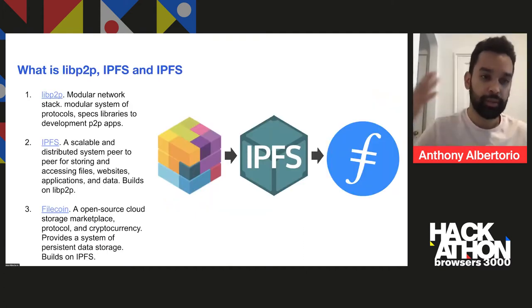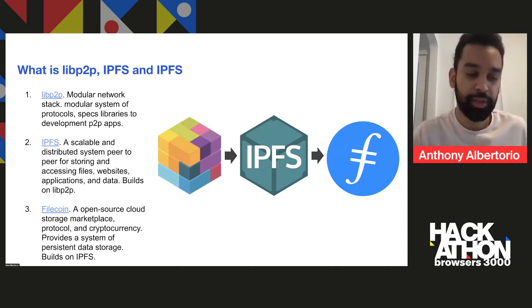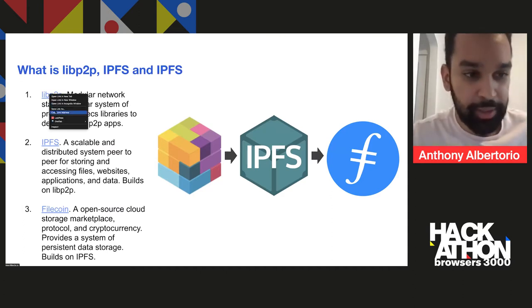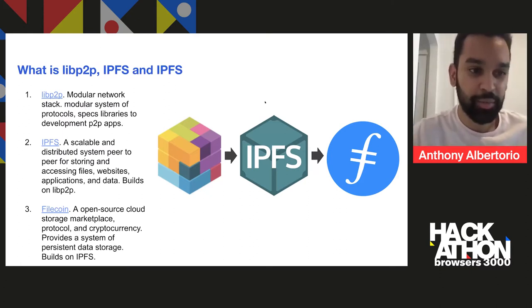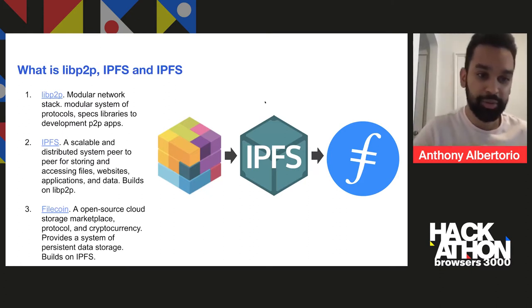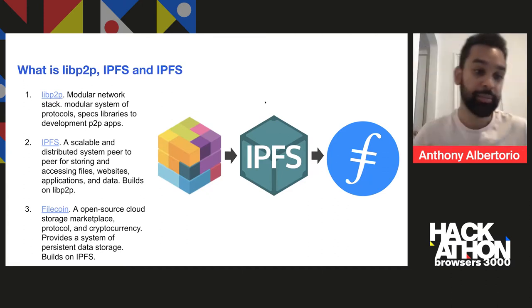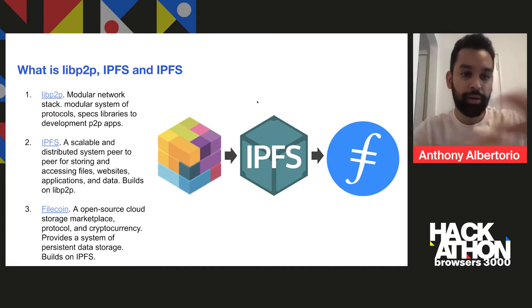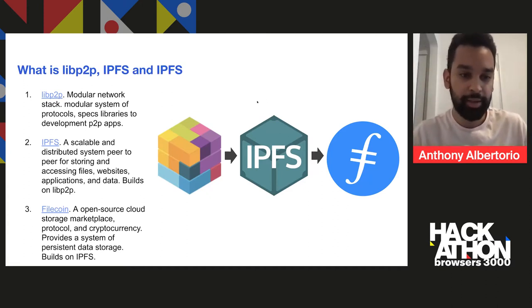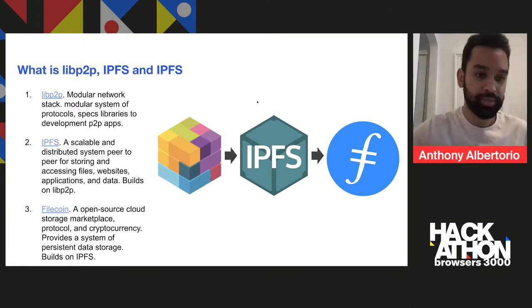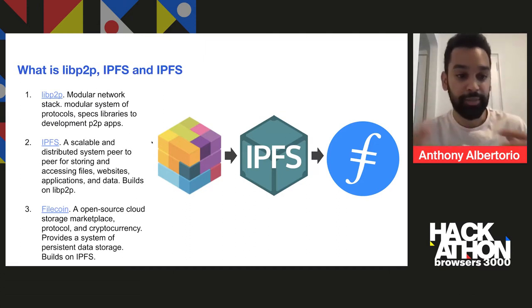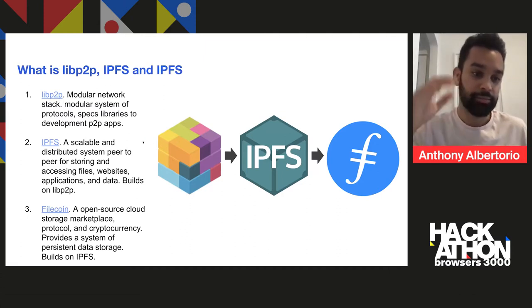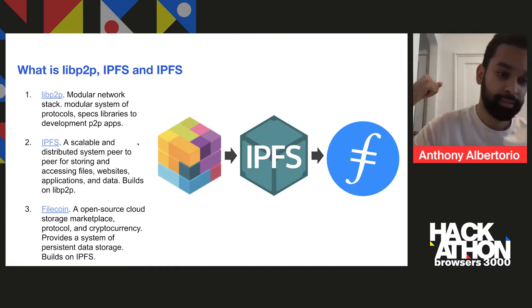Quick overview: LibP2P is one of the most underrated projects in the ecosystem. Think of it as Express.js but for P2P apps — it's a really mature project. IPFS is built on that, and then Filecoin is built on IPFS. You have a routing system used for distributed storage and access of files, websites, applications, and data. And then you have Filecoin, which basically incentivizes this accessing of files, websites, and data.